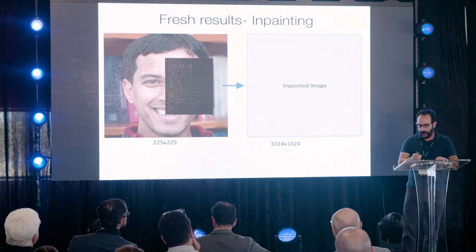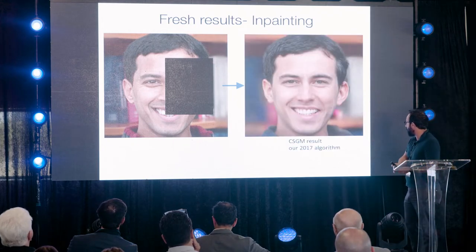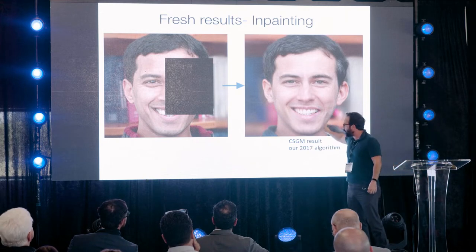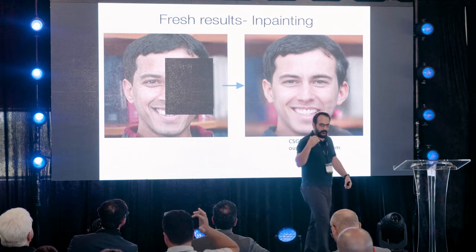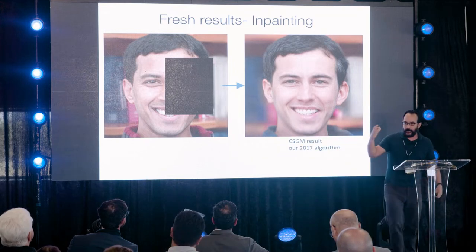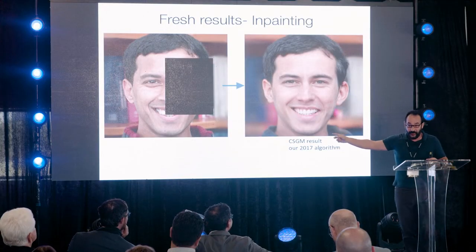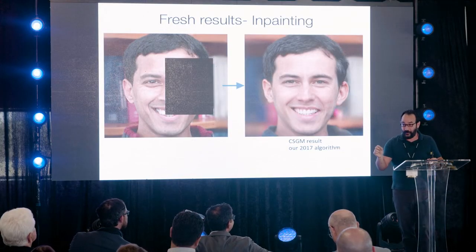Once we ran our 2017 CSGM algorithm, we got this image. It's pretty amazing — it produced somebody with two eyes and a mouth, knowing all the statistics of humans. But if you look more carefully, you realize it produced a white person, and Vijay is not. So there's some good news and some bad news — there are biases we need to be careful about.